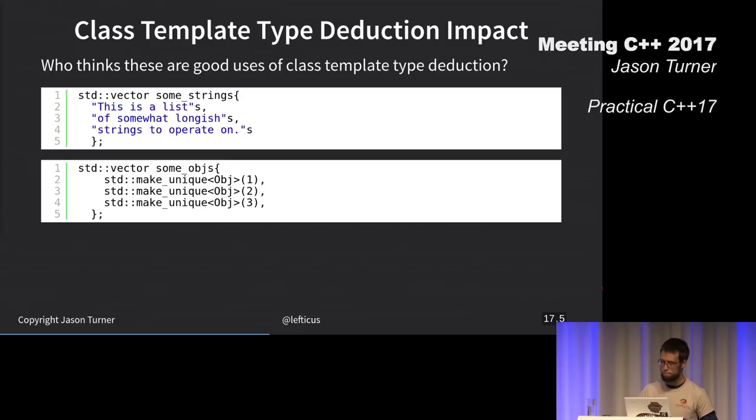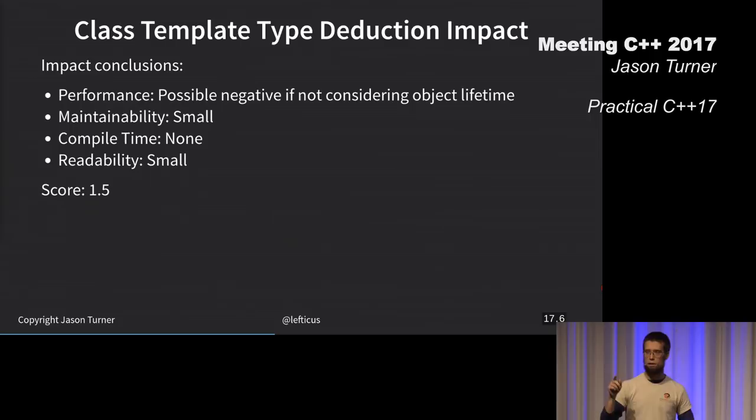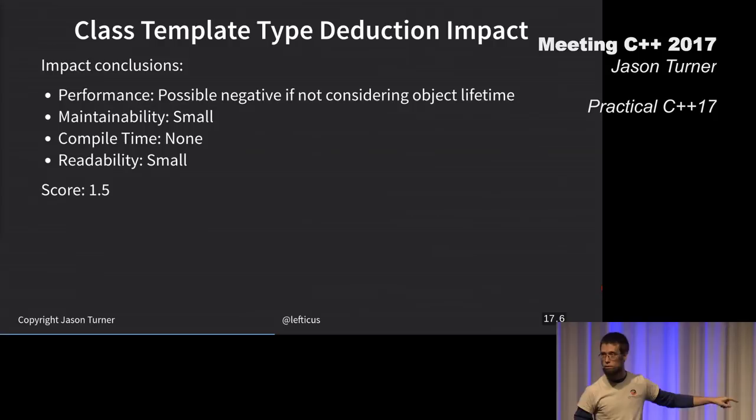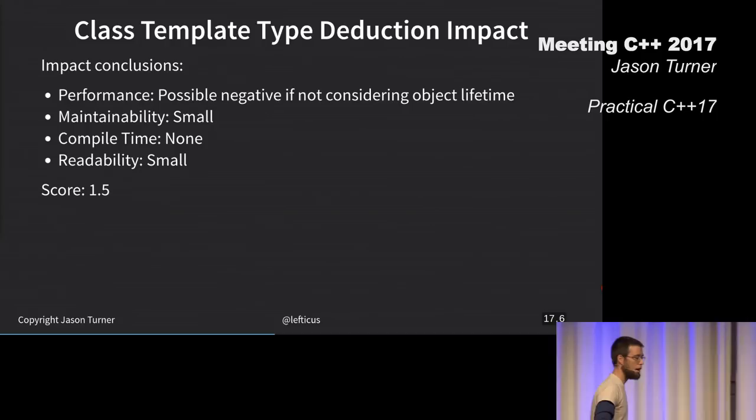It's initializer list's fault. It's not class template type deduction's fault. However, it affects our ability to meaningfully use class template type deduction with standard containers. What about the fact that it removes the noise that you have to create make functions? I think auto return types in C++14 are more important for that than class template type deduction.